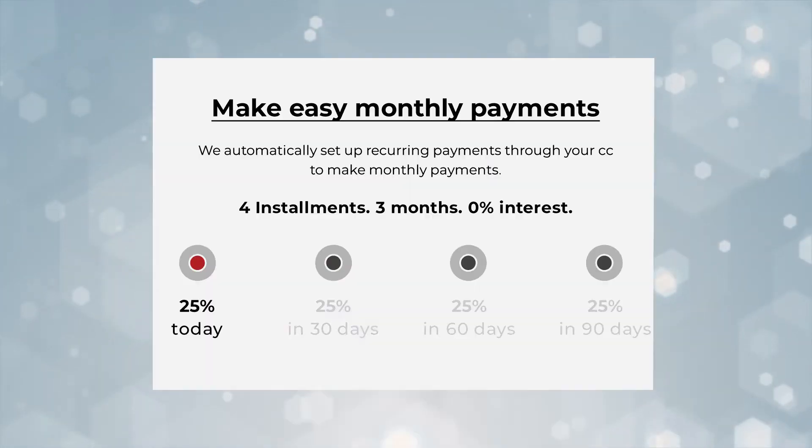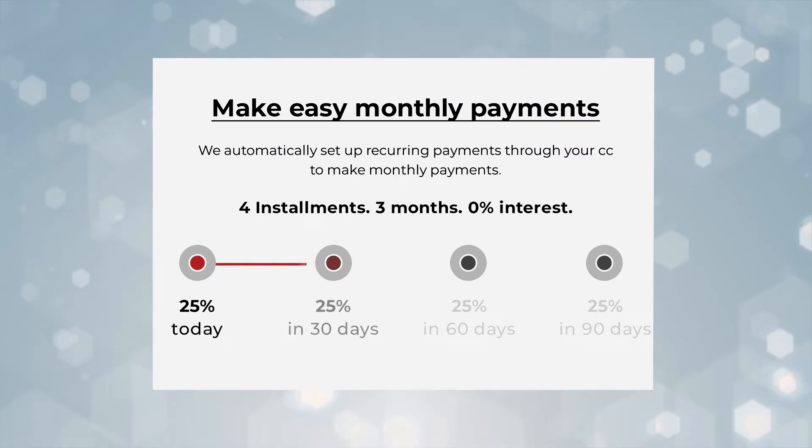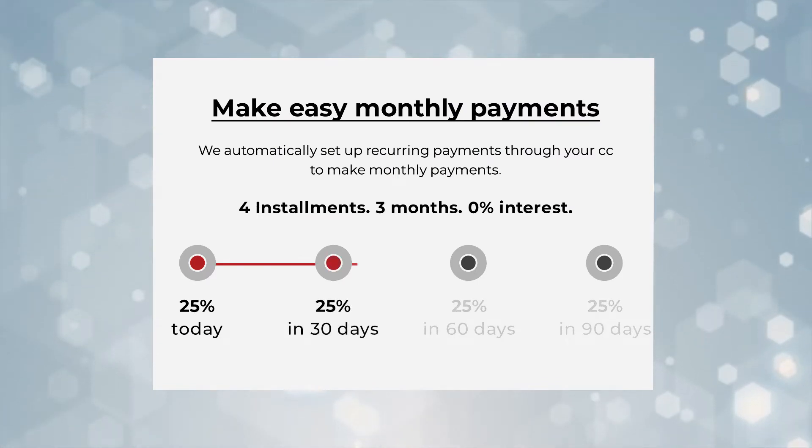The thing is, with our plugin, if I have a $100 product — let's say a pair of running shoes — and I put down a $25 deposit, the next month that $25 payment, I would just get an email to manually pay it.